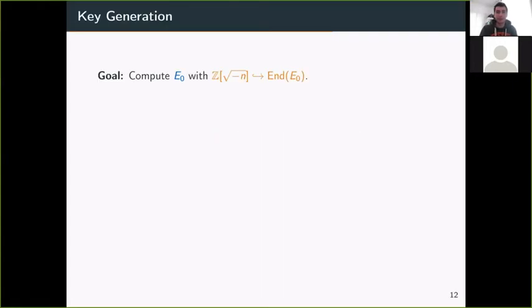First, I'll briefly give you the key generation procedure, because this is not something Peter introduced, but the key generation algorithm has a big impact on the selection of parameters. Our goal is to compute the curve E₀ with this embedding of this special quadratic order ℤ[√-n] inside its endomorphism ring. How do we do that? The answer is we'll use the Deuring correspondence.